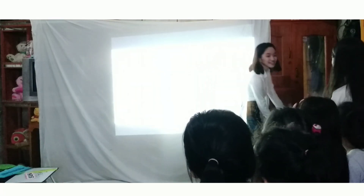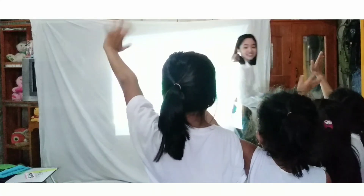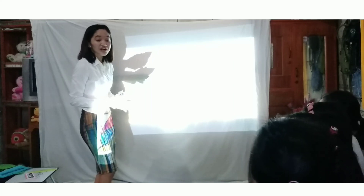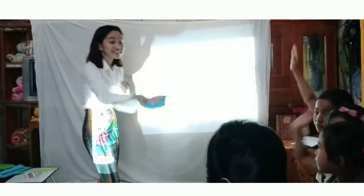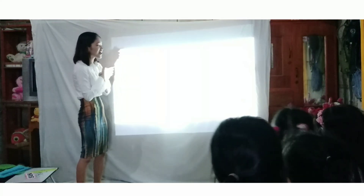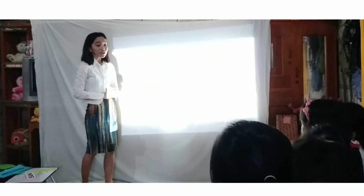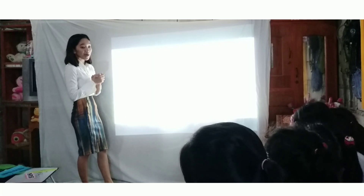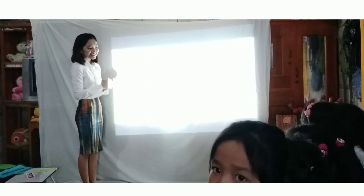Paano natin mapapahalagahan ang ating Earth? — Lilisin natin. — Very good! Alagahan natin yung Earth. Dapat sa murang edad pa lang natin, dapat matuto tayo na linisin ang kapaligiran at itapon ito sa maayos na basurahan. Tapos, huwag tayo nagpuputol ng puno, at dapat nagtatanim tayo ng mga halaman.